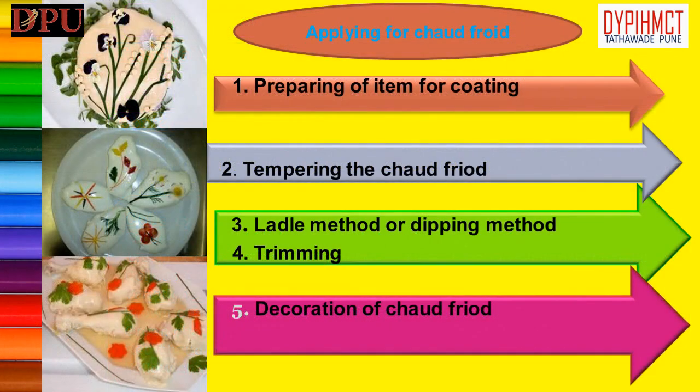Applying chaud-froid sauce. Preparing the item for coating: 1. The item should be well chilled. 2. The surface should be smooth and raw edges trimmed. 3. Surface grease or skin should be removed. 4. Items should be blotted dry for better adhesive quality.